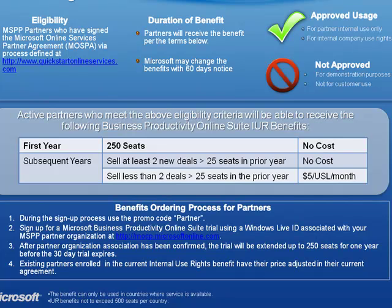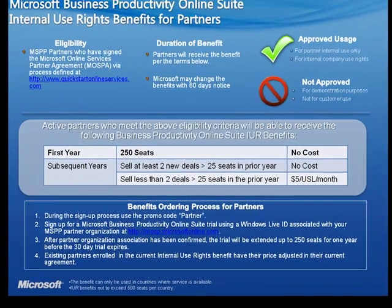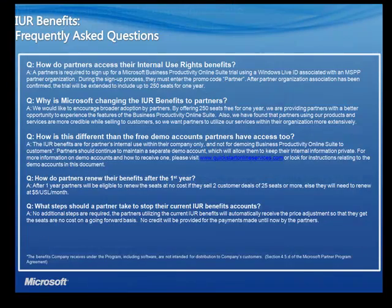If you fail to sell at least two deals of 25 seats or greater in the first year, you will be charged $5 per license in the next year. If you have any questions, please visit QuickStartOnlineServices.com.